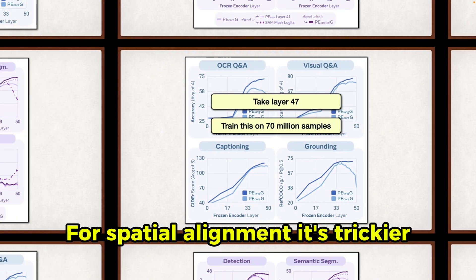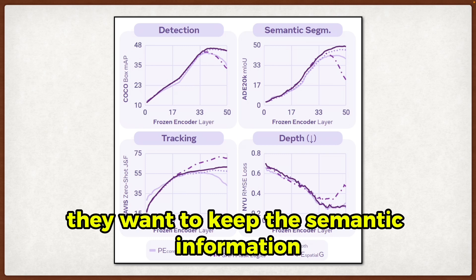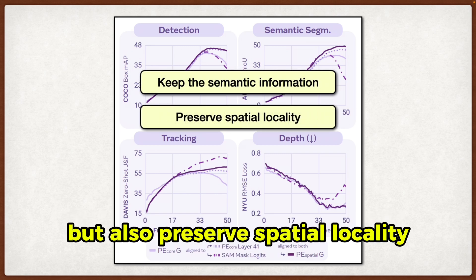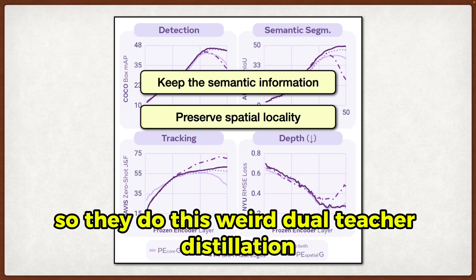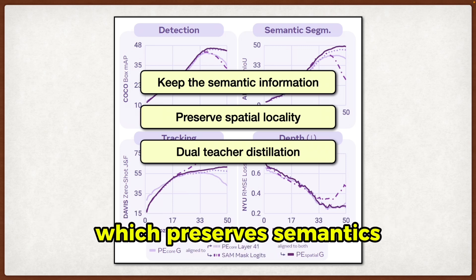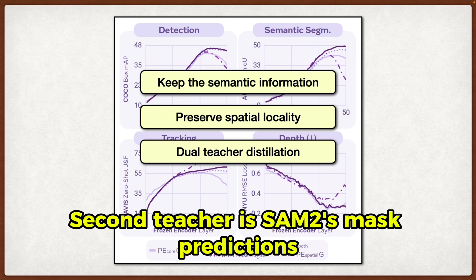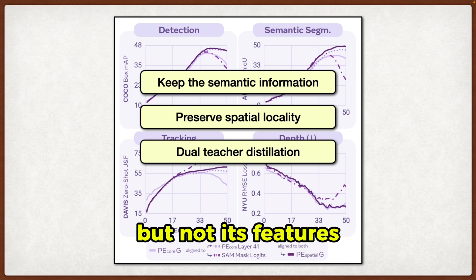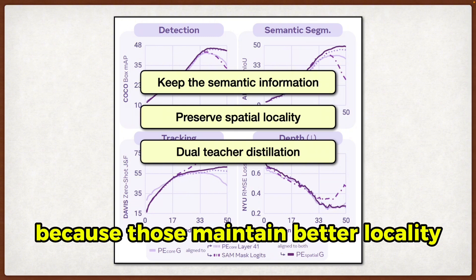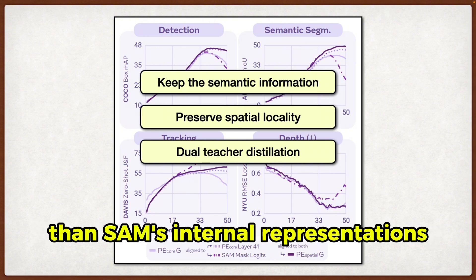For spatial alignment, it's trickier. They want to keep the semantic information but also preserve spatial locality, so they do this dual teacher distillation. The first teacher is the model's own layer 41 features, which preserves semantics. The second teacher is SAM2's mask predictions — not its features, but SAM2's actual mask logits as pseudo features, because those maintain better locality than SAM2's internal representations.